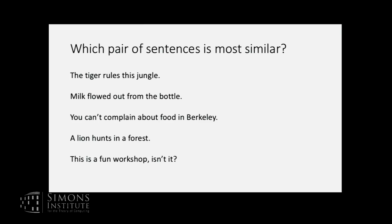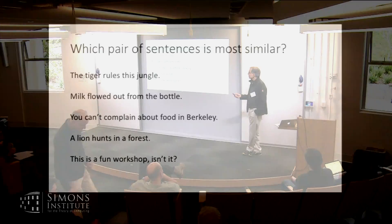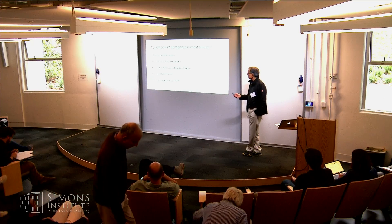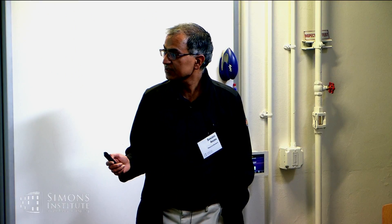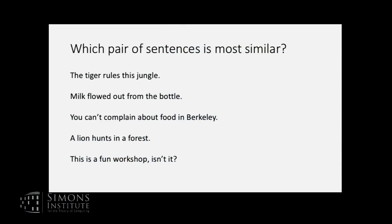Let me start with semantics using this example. Which pair of sentences out of these five are most similar? Which tiger rules this jungle, milk flows from the bottle, you can't complain about food in Berkeley, a lion hunts in a forest, this is a fun workshop, isn't it? One and four.